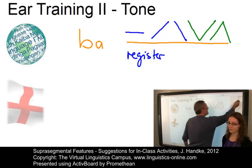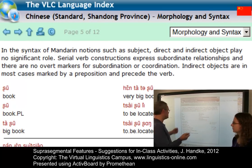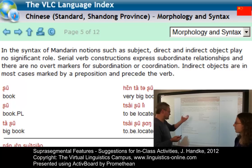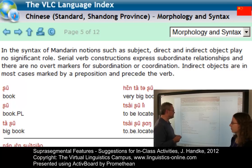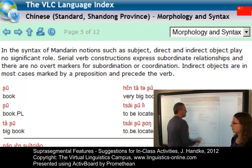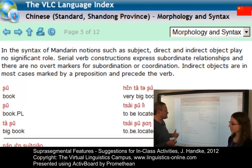I suggest using an example from the language index. You can practice here with tone in Chinese. You can ask your students to read from transcription — let's say they have to read the Chinese version of 'the very big book.' The advantage is you can compare transcription with your own pronunciation and the real pronunciation by a native speaker.